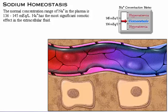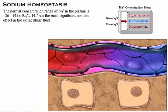The normal concentration range of sodium in the plasma is 136 to 145 milliequivalents per liter, making sodium the ion with the most significant osmotic effect in the extracellular fluid.